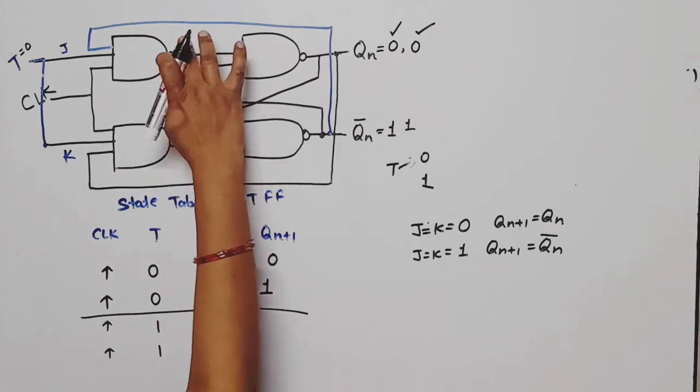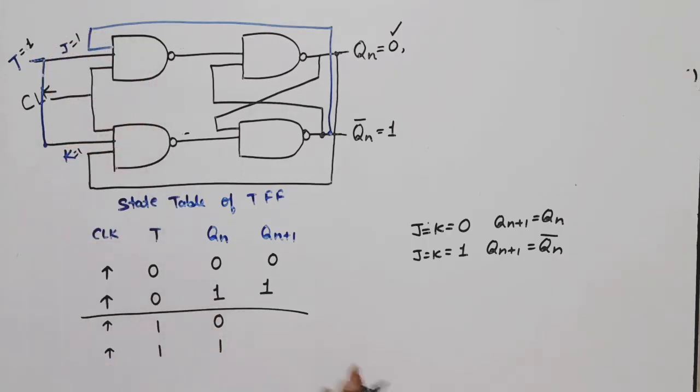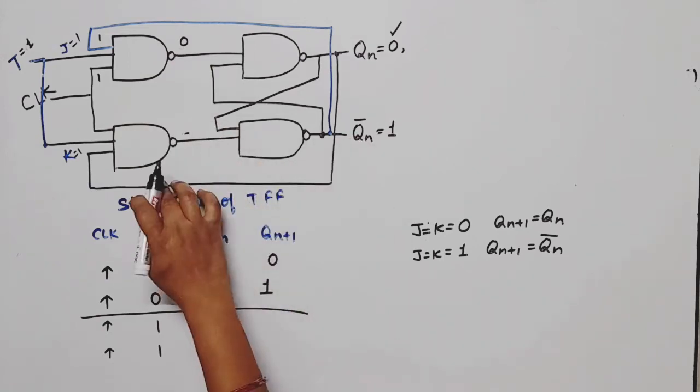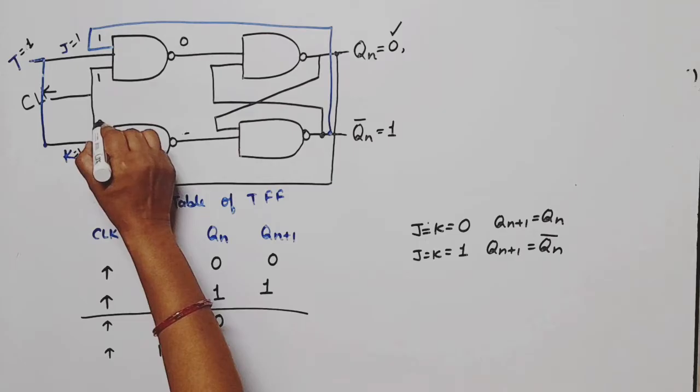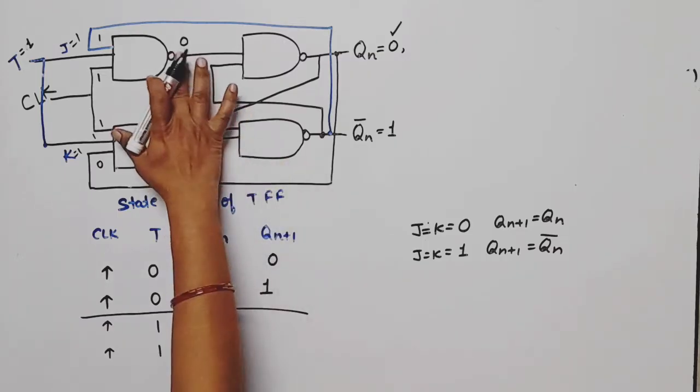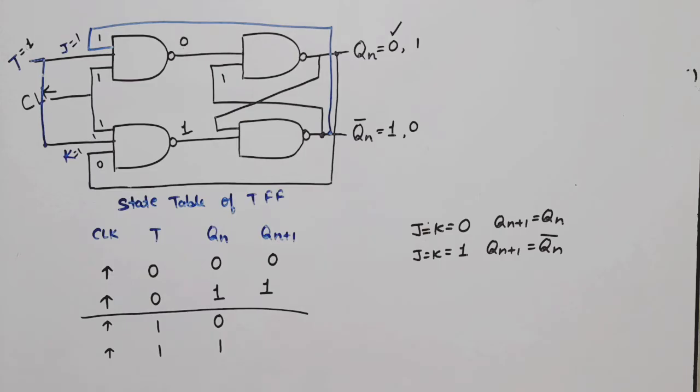Now let me verify the second case. If T is equal to one, then J will be one and K will be one. In this case, J is one, clock is one, so here we'll get zero. Here, zero is being applied from feedback, clock value is one, and K value is one, so here we'll get one because one input is zero. For the NAND gate receiving zero from feedback with one input, output will be one. If this is one, then obviously here it will toggle, meaning it will change. So if T is one and present state is zero, next state will be one. If T is one and present state is one, next state will be zero.